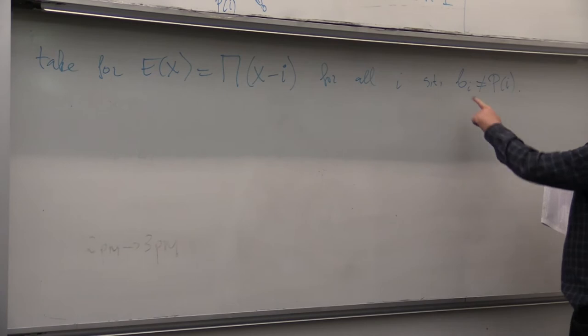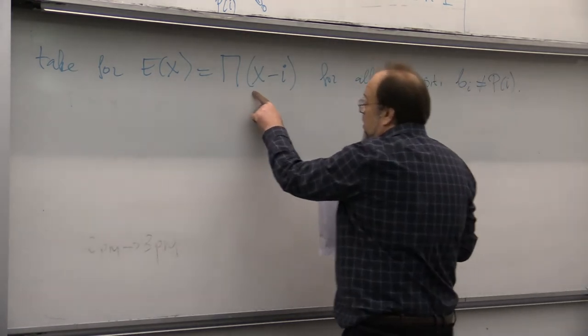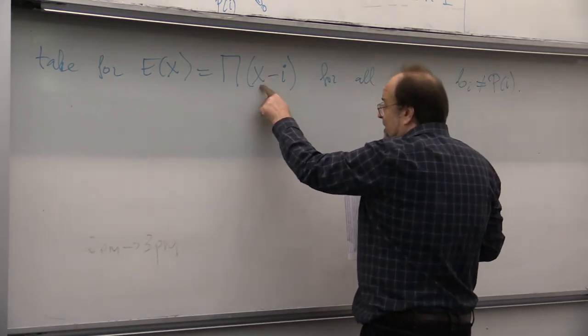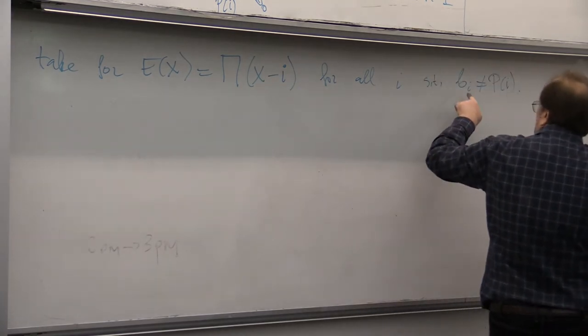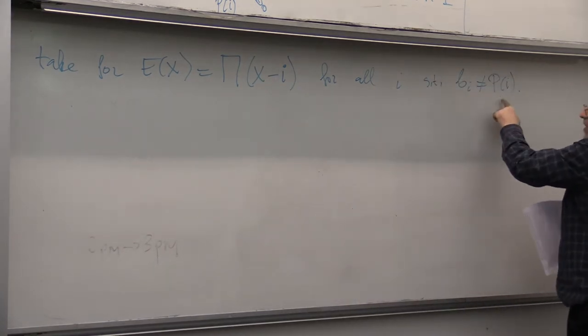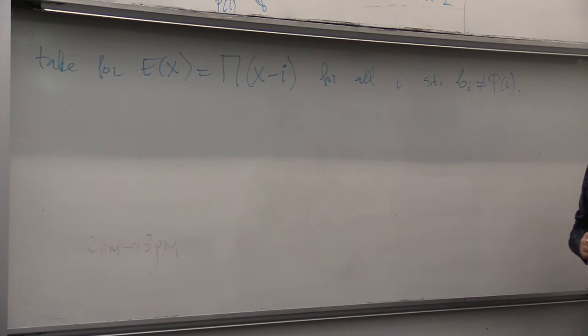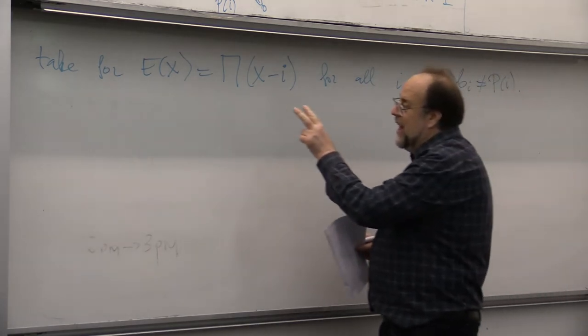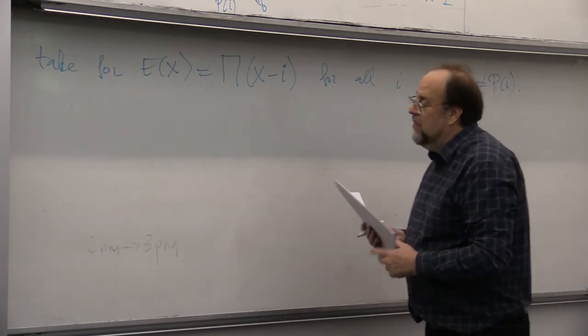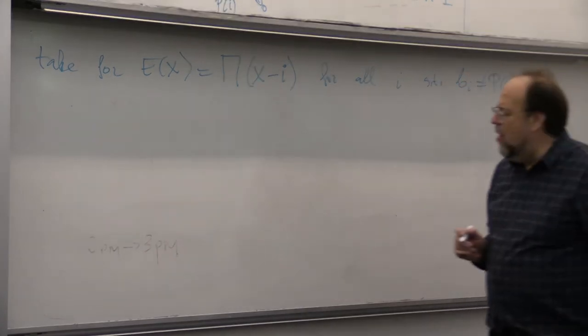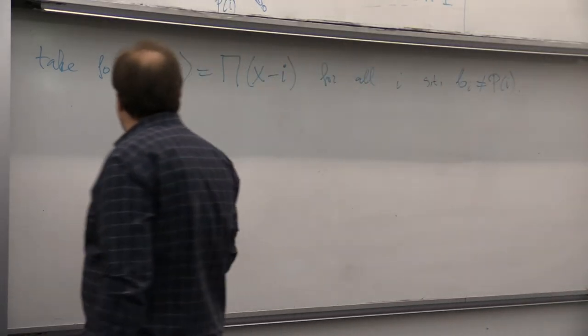So, this E of X will be zero precisely for I's where the message got scrambled. This is what I meant that we will screen out the errors. We will cover them up.